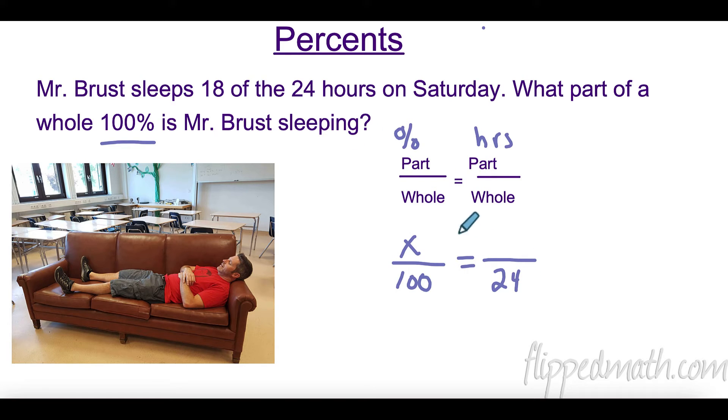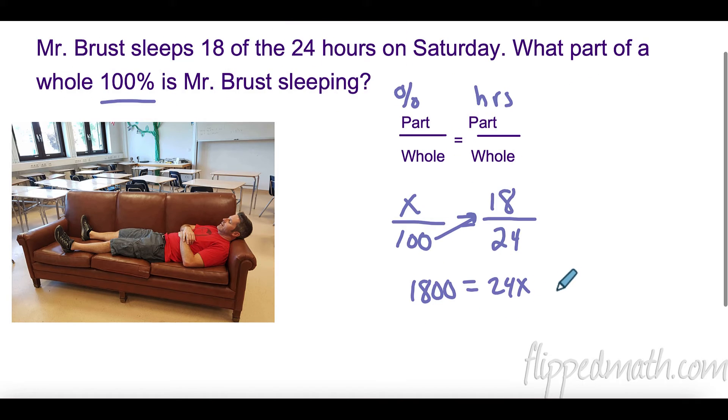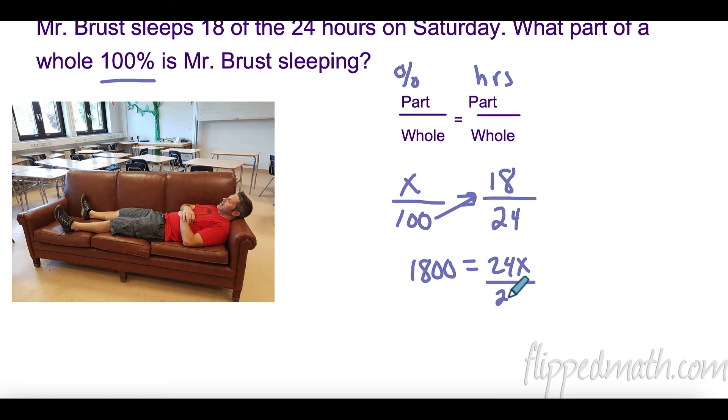Now we know how to solve these - we're going to cross multiply. I love multiplying by 100 because I just add two zeros to the end. So this is 18 times 100, or 1800, equals 24X. Now we divide both sides by 24, and we find that he slept for 75% of his day. It's always important with word problems to include a label. If you just had 75, we may not know what that meant.